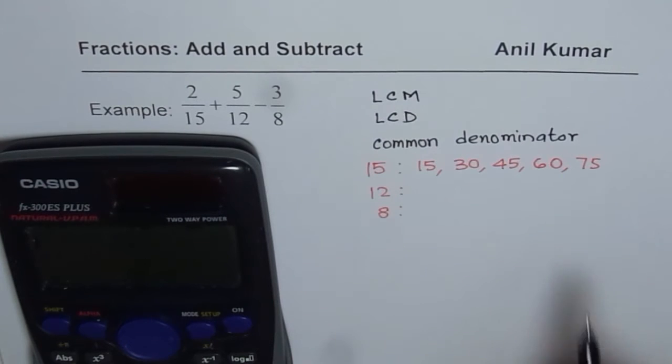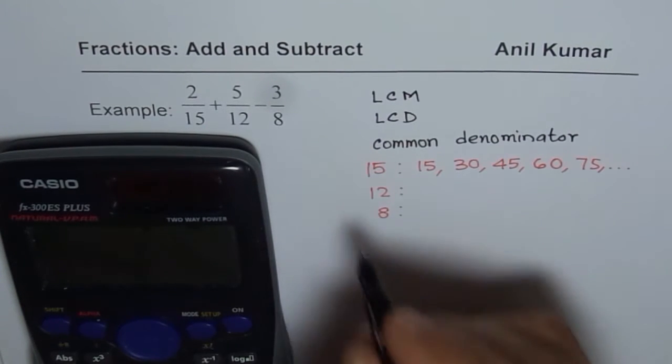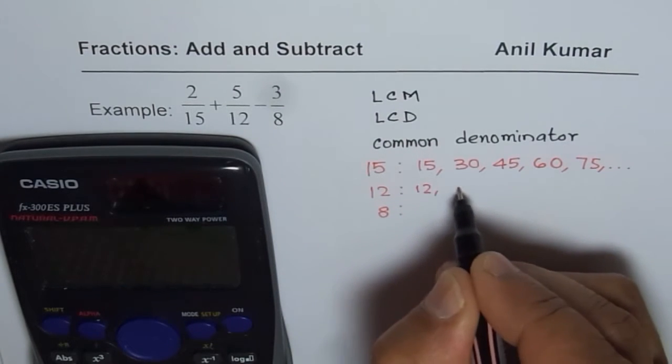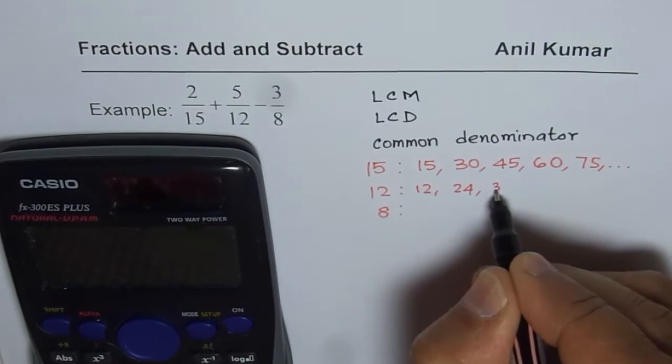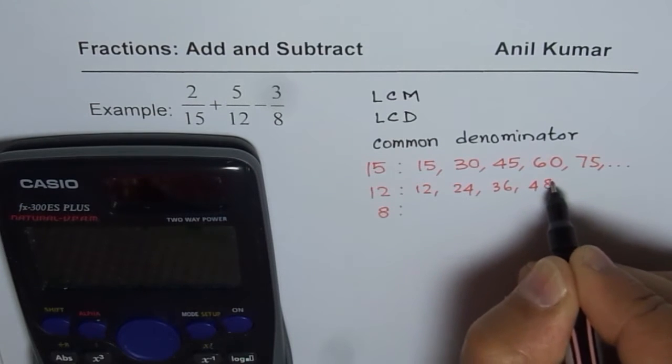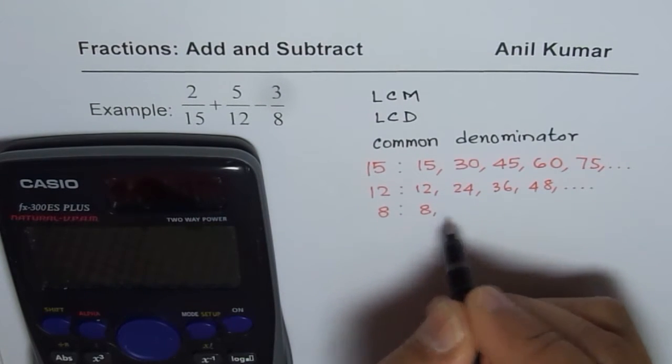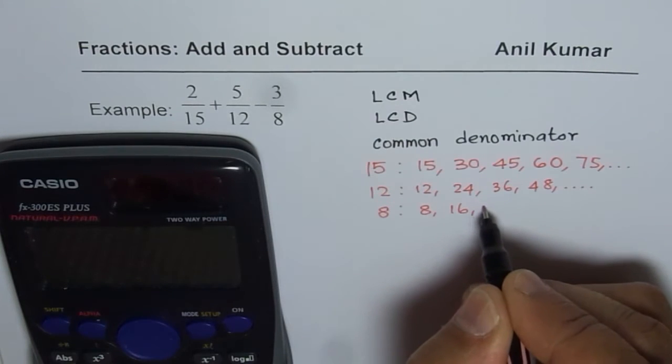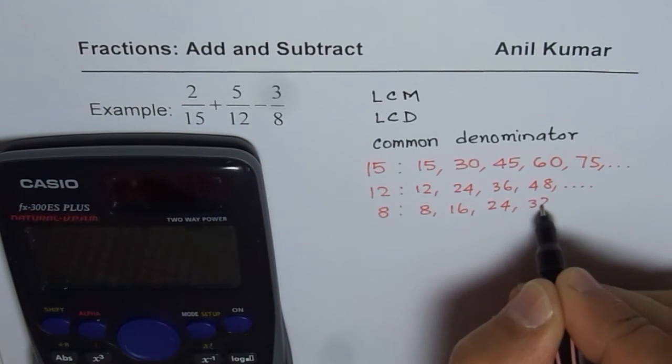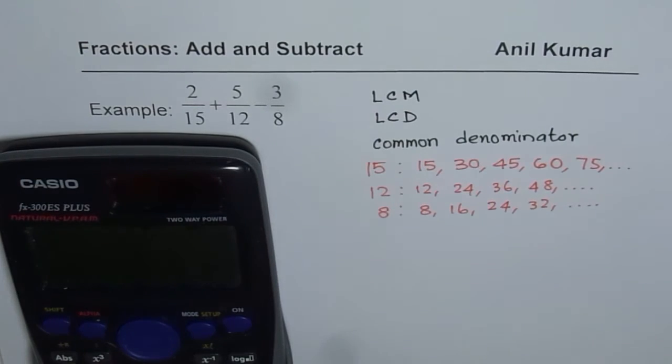We can just go on with this list of multiples. And then with 12, we have 12, we have 24, 36, 48 and so on. And with 8, we have 8, 16, 24, 32 and so on.